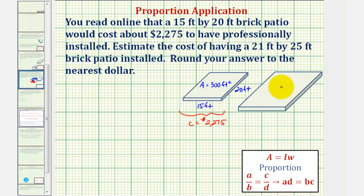We want to estimate the cost for a larger patio that's 21 feet by 25 feet. And therefore the area of the larger patio would be equal to 21 feet times 25 feet, which would be 525 square feet.